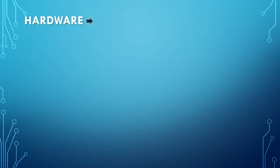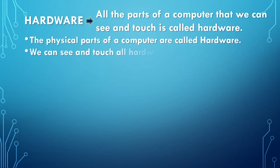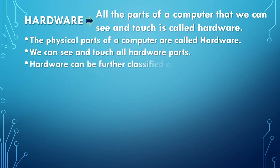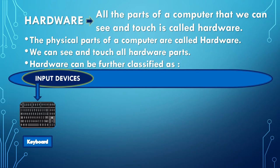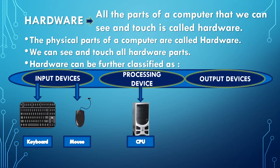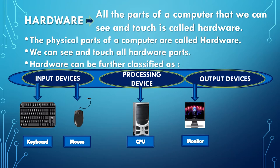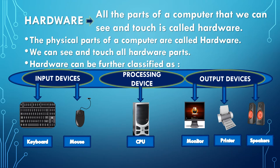Hardware: All the parts of a computer that we can see and touch are called hardware. The physical parts of a computer are called hardware. Hardware can be further classified as input devices — keyboard, mouse; processing device — CPU; and output devices — monitor, printer and speakers.